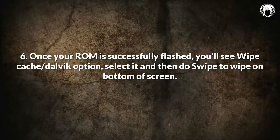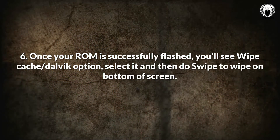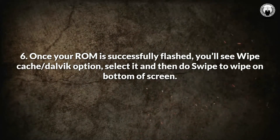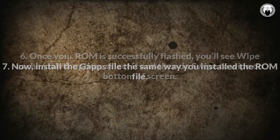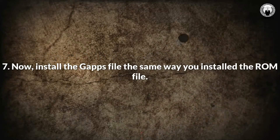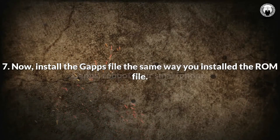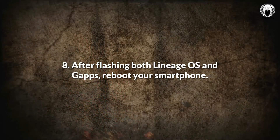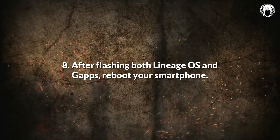Step 6: Once your ROM is successfully flashed, you'll see a Wipe Cache and Dalvik option — select it and then swipe to wipe at the bottom of the screen. Step 7: Now install the GApps file the same way you installed the ROM file. Step 8: After flashing both Lineage OS and GApps, reboot your smartphone.